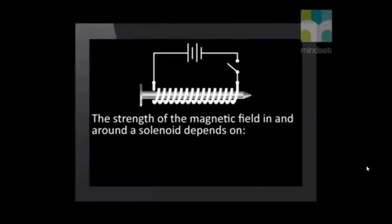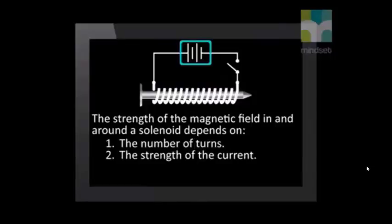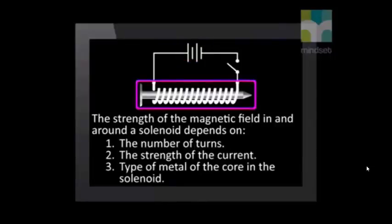Electromagnets are temporary magnets formed by current carrying conductors. The strength of the magnetic field in and around a solenoid depends on the number of turns, the strength of the current, and the type of metal of the core in the solenoid.